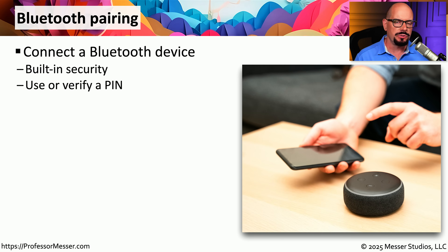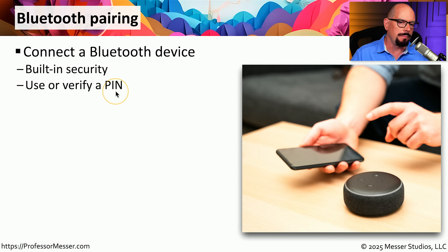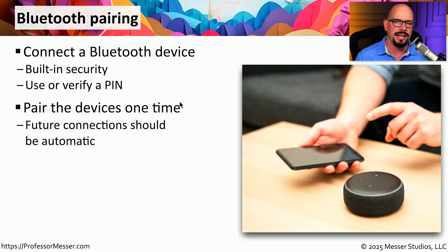If you've ever had to connect a Bluetooth device such as a headset or external speaker, you know there's a process to go through to make sure those two devices are paired successfully. This is not only a process that ensures security, but it also makes sure you're able to connect to that device automatically later on. This process commonly uses a personal identification number, or PIN, to verify connectivity when you set it up initially. Fortunately, you only have to go through this pairing process one time for a piece of hardware. Once it's paired, you can connect and disconnect without repeating the process.